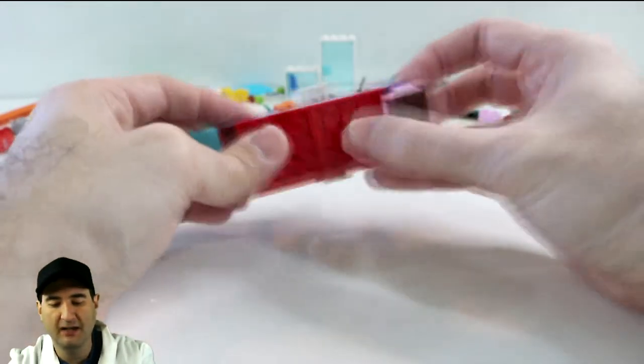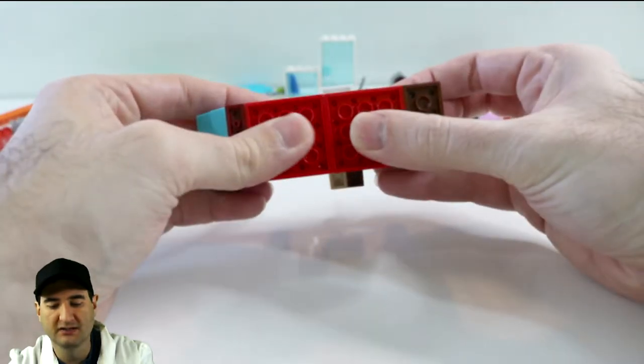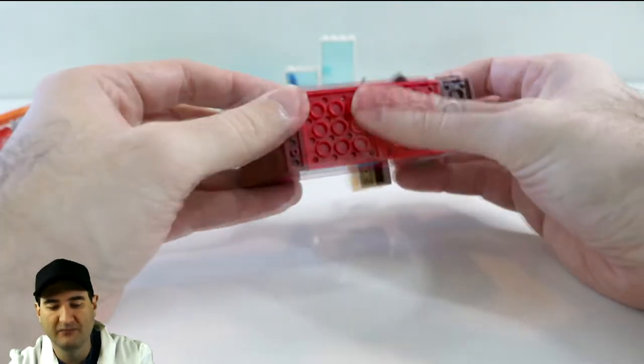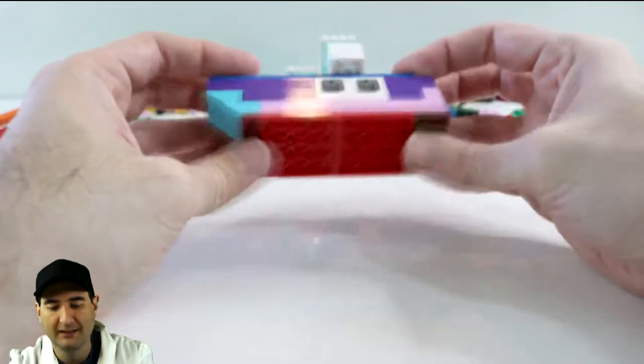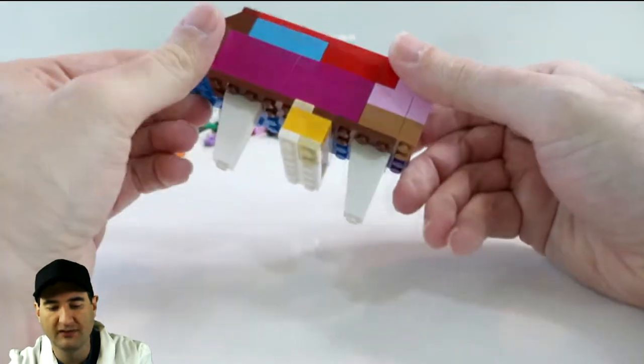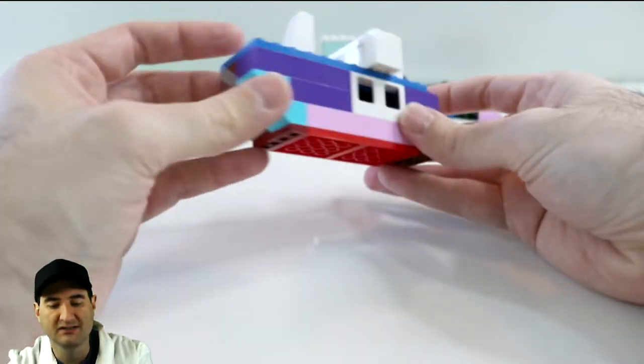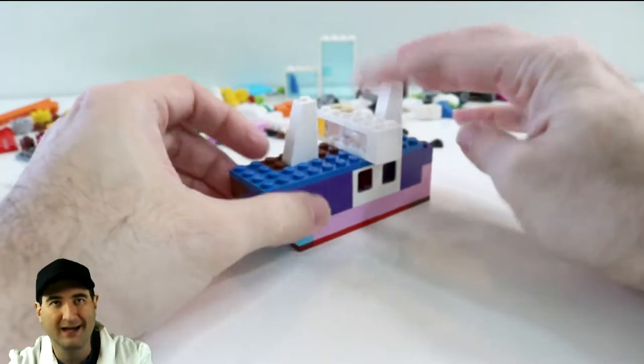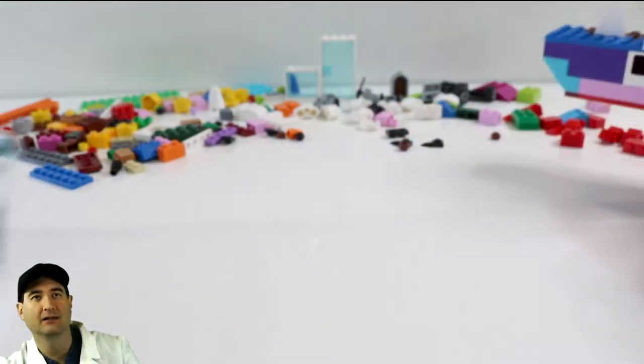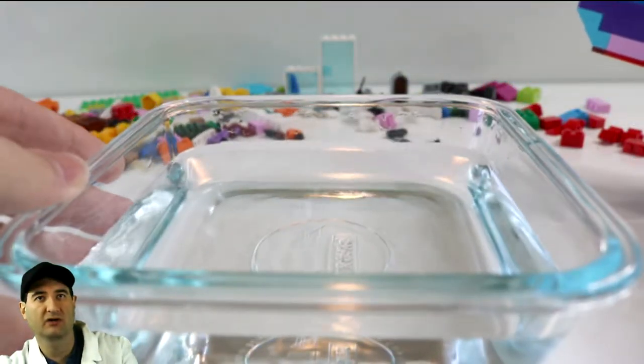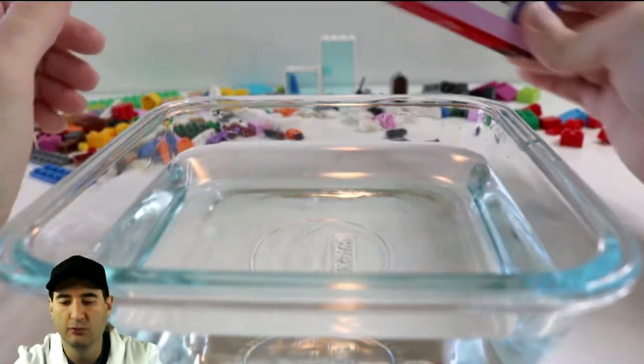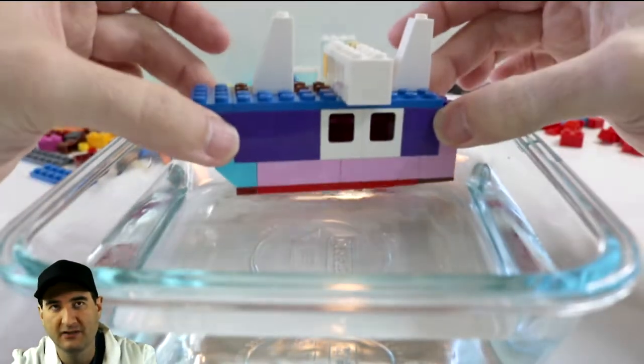Now, what we've done is we've capped over some of the bricks with this 4x4 plate. So all the bottom bricks are fully capped over. The only issue is it's really tall, really top heavy. So let's see. Let's bring on the water. We got a trusty Pyrex bowl. So we're going to put this in here and see if it floats.